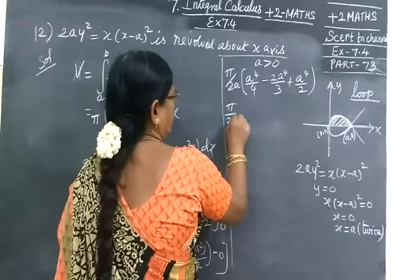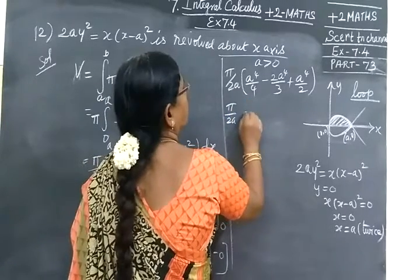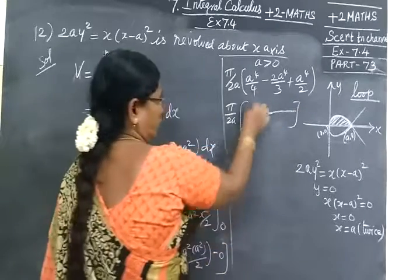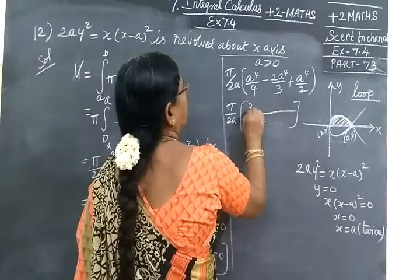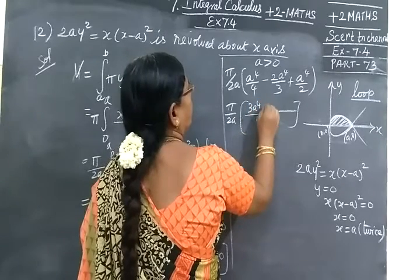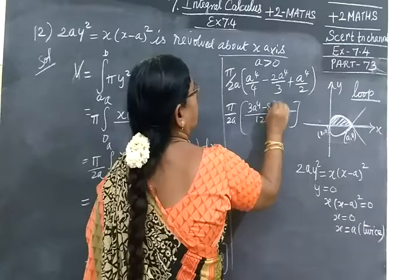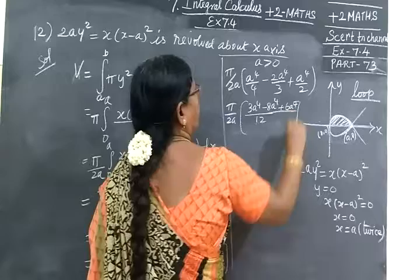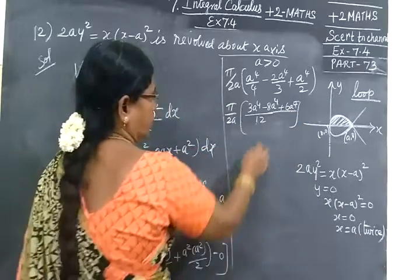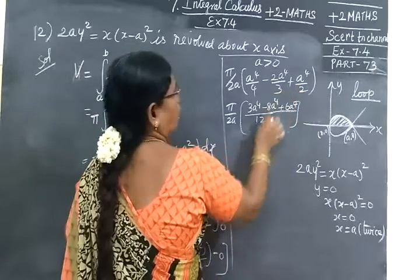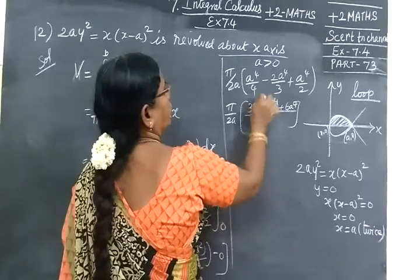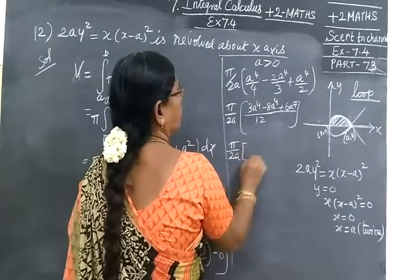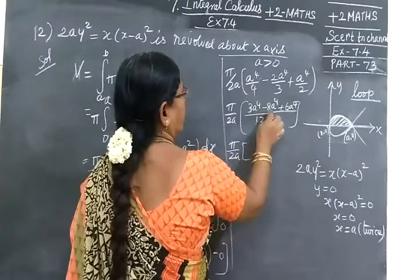π by 2A. Now the LCM is 12. So 3 times, 3A⁴, 4 times minus 4A⁴ plus 6 times, 6A⁴. So 6 plus 3 is 9 minus 8, A⁴ by 12.